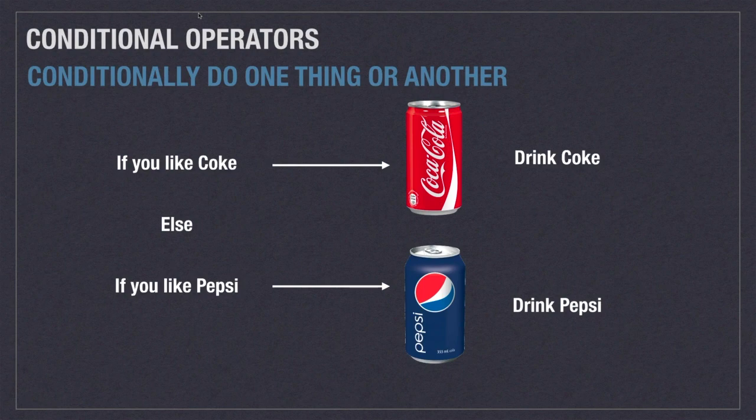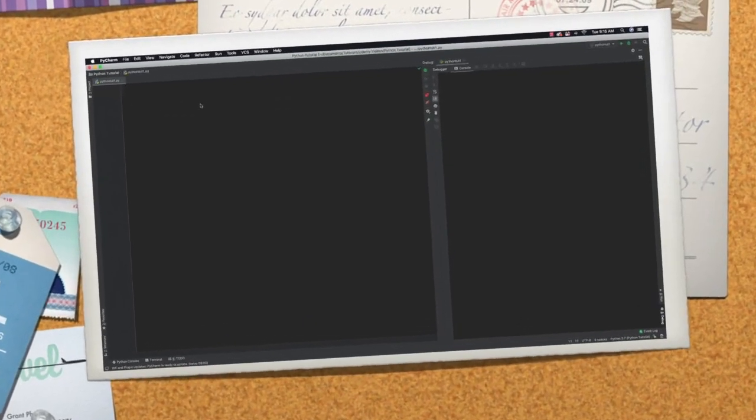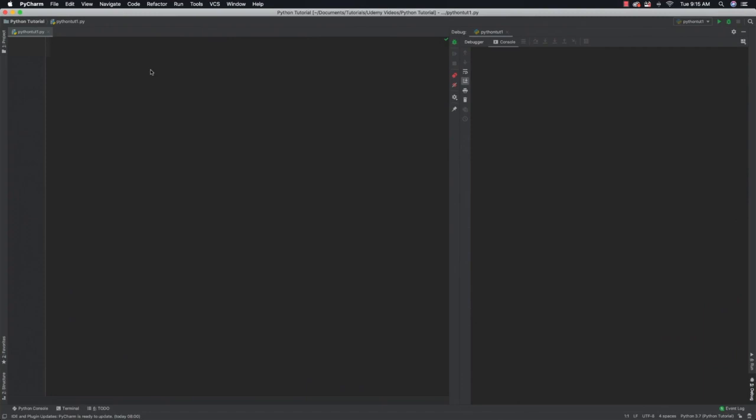It's easy to understand why conditional operators are important. Consider if you went to a restaurant and were asked whether you would want a Coke or a Pepsi — based on your decision, you provide a choice. We will be using both conditional as well as logical operators in our conditions.